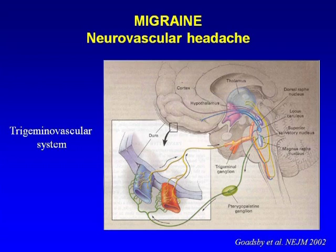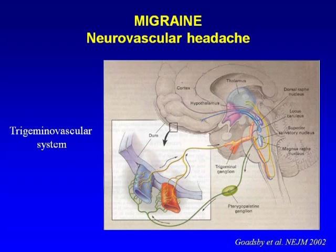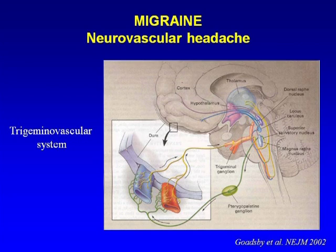Where migraine starts is not known for certain — whether the generator is in the brainstem, vessels, or cortex. We know certain structures are involved: the hypothalamus, thalamus, brainstem with periaqueductal gray matter which modulates pain, the trigeminal spinal nucleus which is important for facial pain perception, and perivascular nociceptors. The brain parenchyma itself has no nociceptors, so pain perceived from the head comes from the skin, muscles, perivascular nociceptors, or the dura, which is very sensitive to pain.